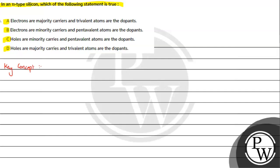For this question, the key concept we need to understand is the concept of n-type semiconductor. Semiconductors are of two types: intrinsic and extrinsic. Intrinsic means pure — no impurity. Extrinsic means impure — with impurity. Extrinsic is further of two types: p-type and n-type. We will discuss the n-type semiconductor.